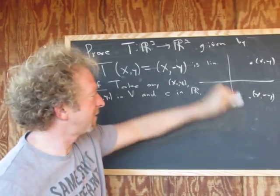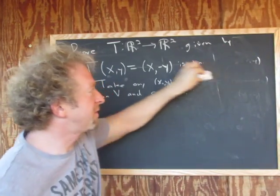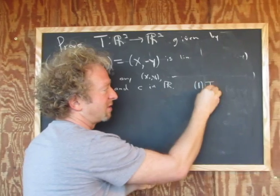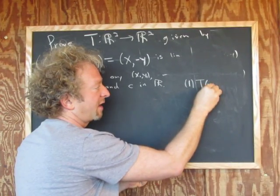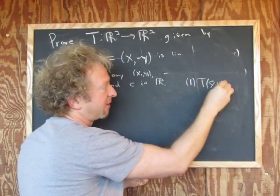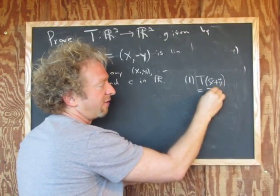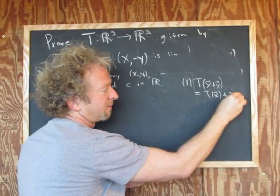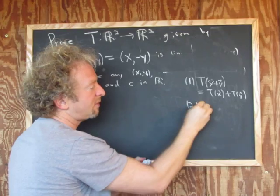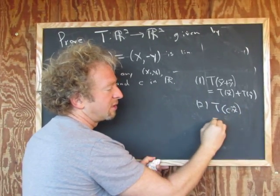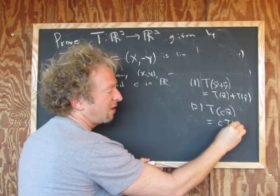Now we have to show, if you remember the definition from before, the definition from before said two conditions. I'll write them over here. I'm going to use vector notation this time. So T of X plus Y is equal to T of X plus T of Y. That's the first condition where X and Y are vectors. And then two, T of C times X is equal to C times T of X.